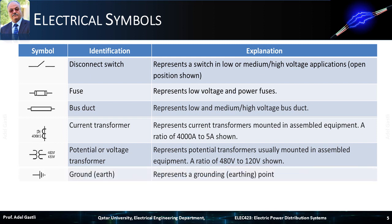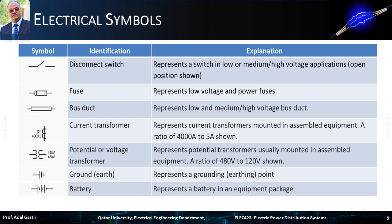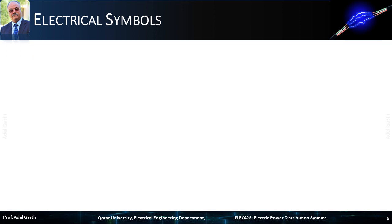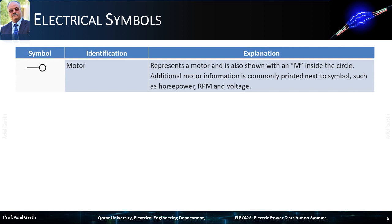The next symbol represents a grounding or earthing point. And the last symbol represents a battery in an equipment package. The first symbol represents a motor, and is also shown sometimes with a letter M inside the circle.